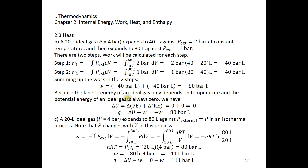Because the potential energy of an ideal gas is always zero and this is an isothermal process, ΔU = 0. Therefore Q = −W = 80 bar·liters.